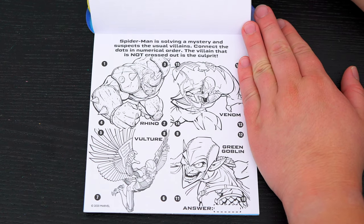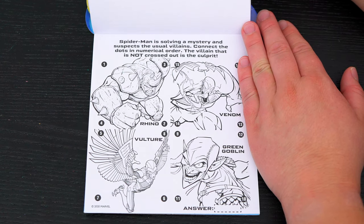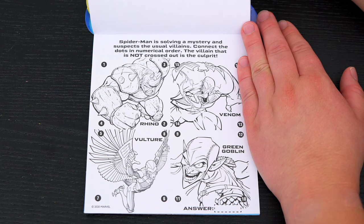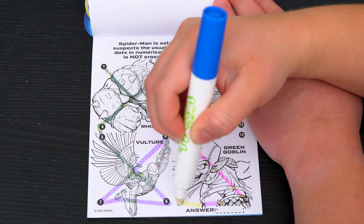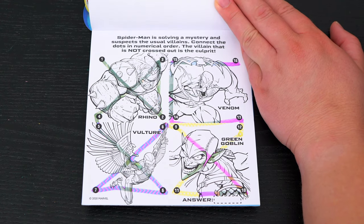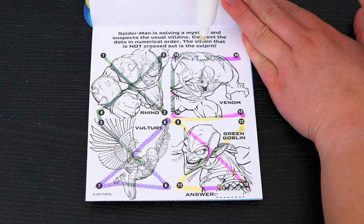Spider-Man is solving a mystery and suspects the usual villains. Connect the dots in numerical order. The villain that is not crossed out is the culprit. Okay, so the only one not crossed out is Venom. Looks like we caught the culprit!